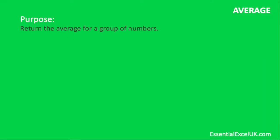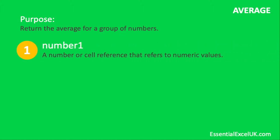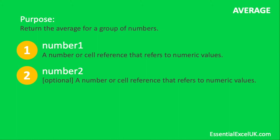So the first function we have is AVERAGE. The purpose of AVERAGE is to return the average for a group of numbers. It's made up of two parts. The first part is number one — a number or cell reference that refers to numeric values. The second and final part is number two, which is optional and is also a number or cell reference referring to numeric values. You can see the full function format at the bottom of the page, with AVERAGE, number one, number two, and further opportunity to add additional numbers if needed.